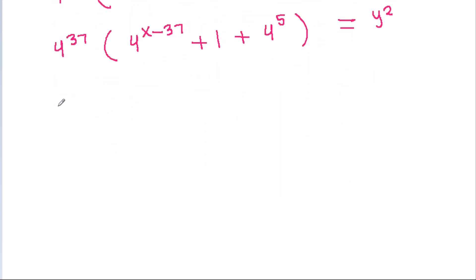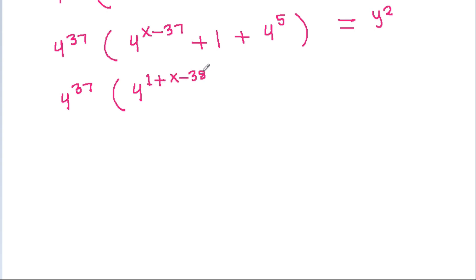And it is 4 power 37 times 4 power x minus 37, which is 1 plus x minus 38 plus 1, and 4 power 5 is 1 plus 4. It is equal to y square.